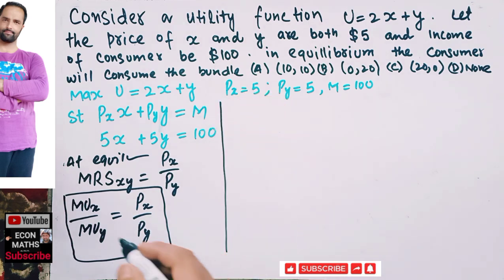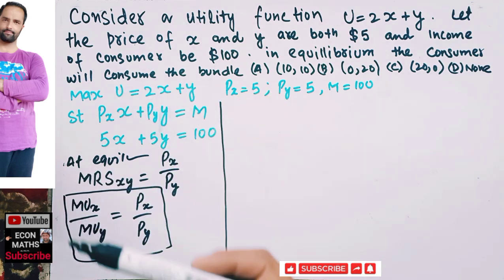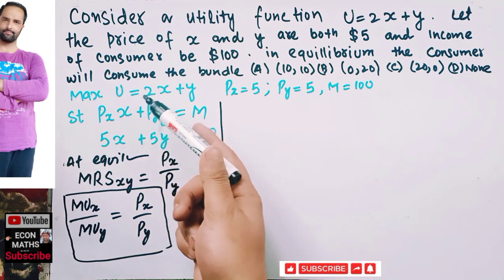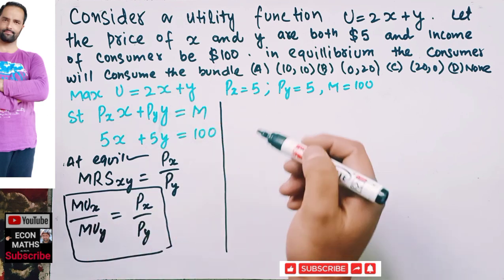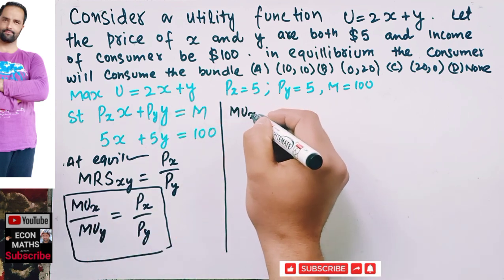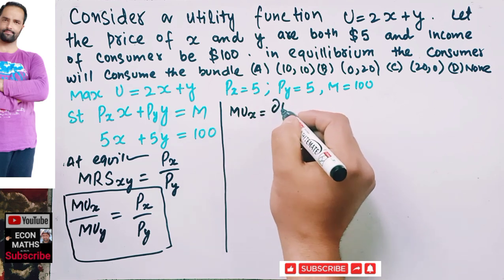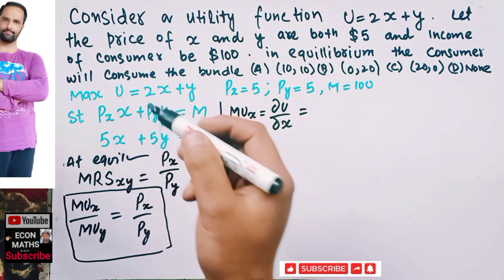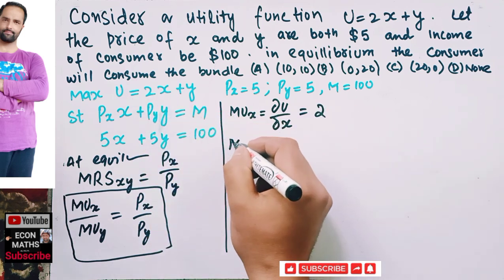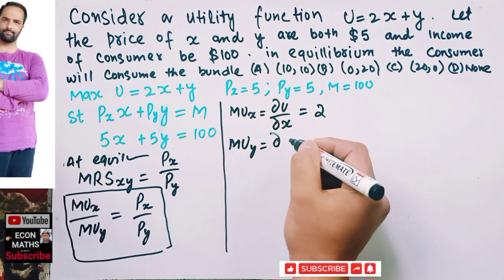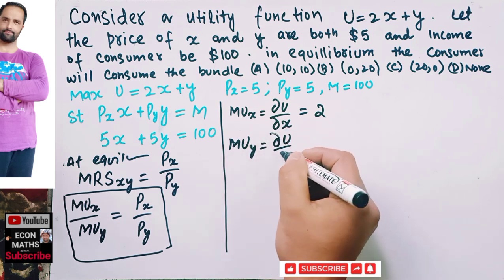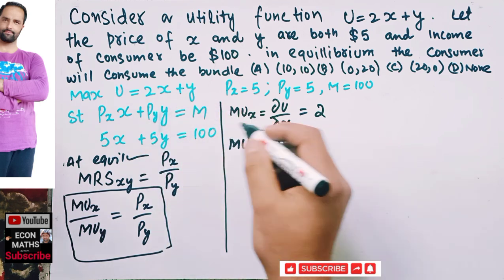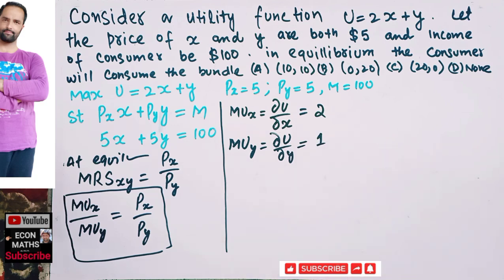The marginal utility of x is simply the partial derivative of the utility function with respect to x. Taking that derivative gives us MUx = 2. The marginal utility of y is the partial derivative with respect to y, which gives us MUy = 1.